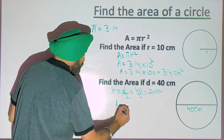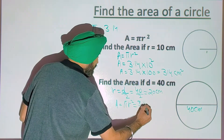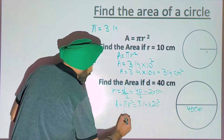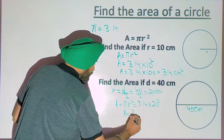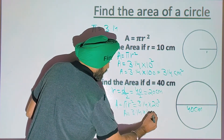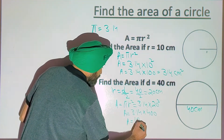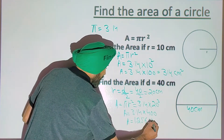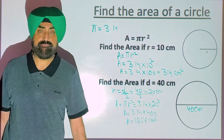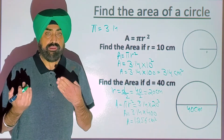Now use the formula A equals pi r squared. Pi is 3.14, r is 20, then square it. 20 times 20 is 400. Multiply these two numbers and you get 1256 centimeter squared. So this way, if radius is given, simply use the formula; if diameter is given, first find the radius by dividing the diameter by 2.